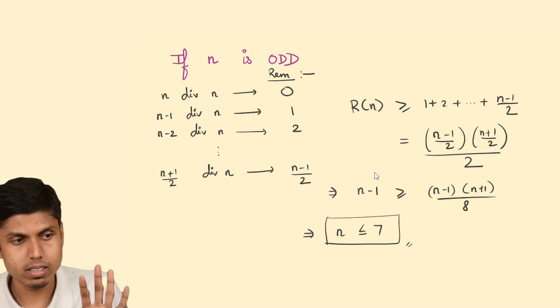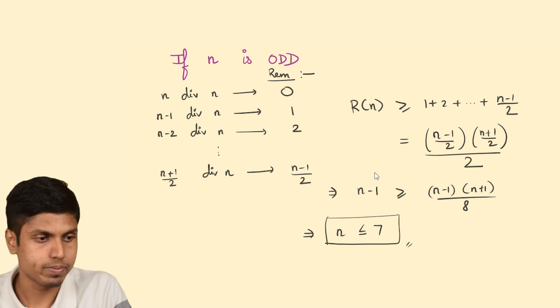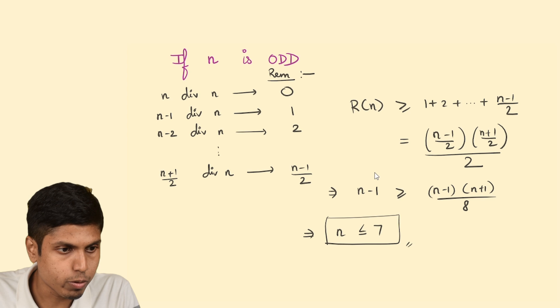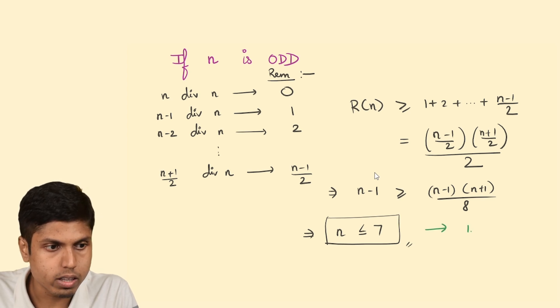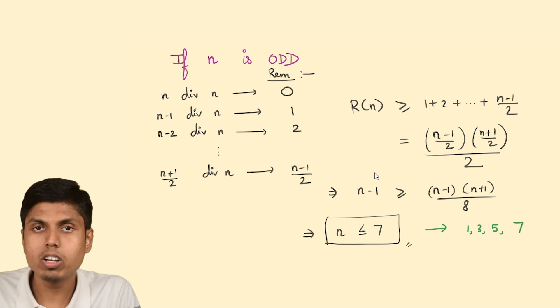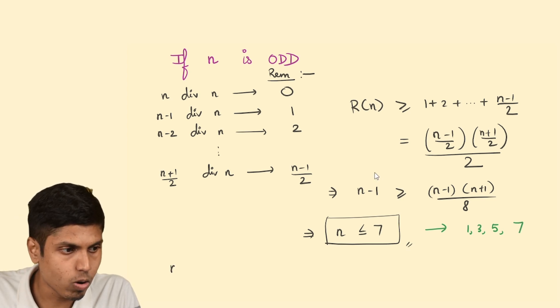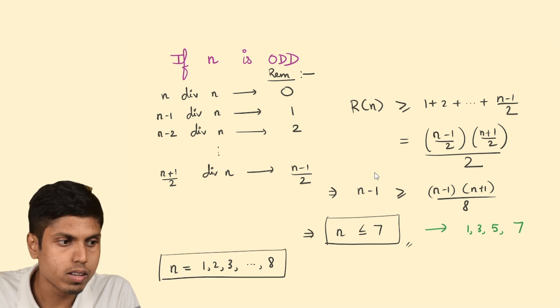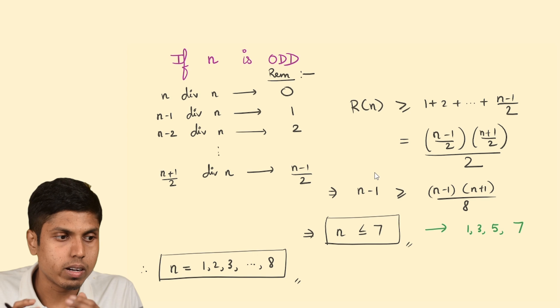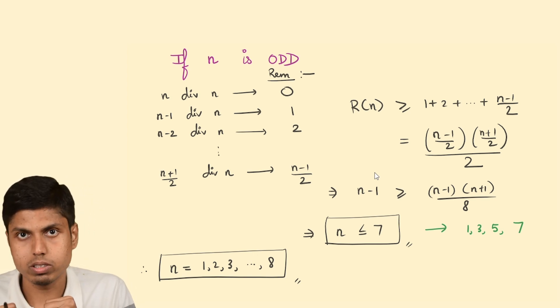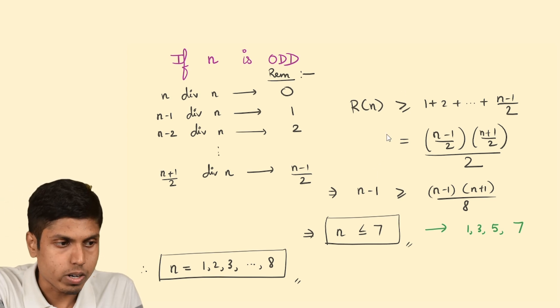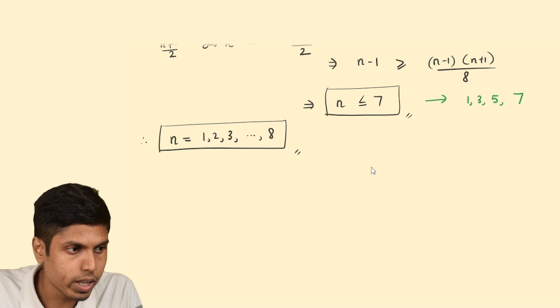Here we got the upper bound for the value of n. This is why you have to analyze the R(n) growth and the growth of n minus 1. What are the possible values here? Here it has to be 1, 3, 5, and 7. In total, we have to consider all the values from 1, 2, till 8. This is the combined result of the two upper bounds for case 1 when n is even and case 2 when n is odd. Now we have to manually calculate it.